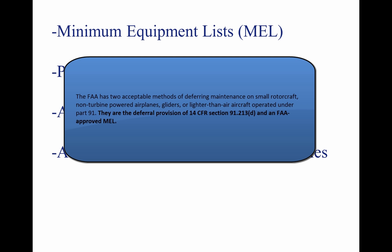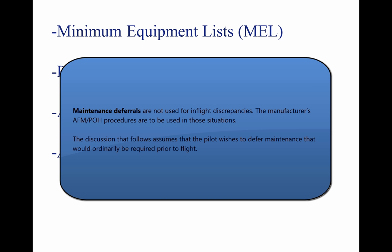The FAA has two acceptable methods of deferring maintenance on small rotorcraft, non-turbine-powered airplanes, gliders, or lighter-than-air aircraft operated under Part 91: the deferral provision of 14 CFR Section 91.213D and an FAA-approved MEL. The deferral provision of 14 CFR Section 91.213D is widely used due to its simplicity and minimal paperwork. When inoperative equipment is found during preflight, the decision should be made to cancel the flight, obtain maintenance, or defer the item. Maintenance deferrals are not used for in-flight discrepancies; the manufacturer's AFM/POH procedures are to be used in those situations.